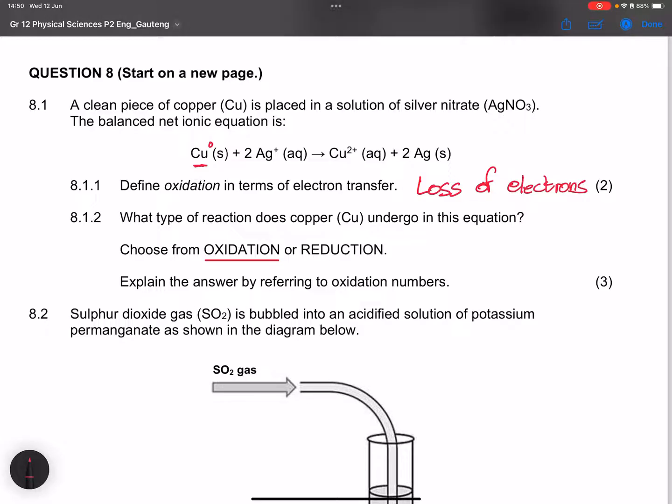And they say explain the answer by referring to oxidation numbers. We can say that copper moves from an oxidation number of zero to two plus. Copper moves from zero to two plus, showing us that it has actually lost electrons. That is how we're going to answer that. Now let's go to the next one.